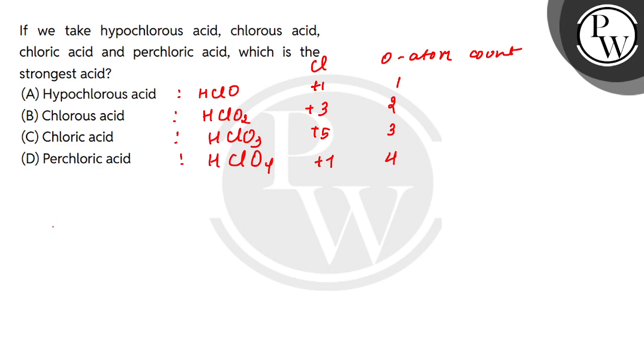So, acidic character or acidic strength, basically these are oxyacids, are directly proportional to oxidation state of central atom. Central atom's oxidation state and the number of oxygen atoms are both directly proportional to acidic strength.